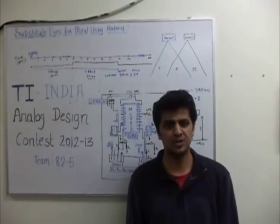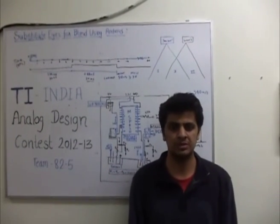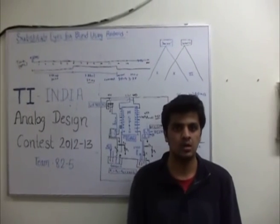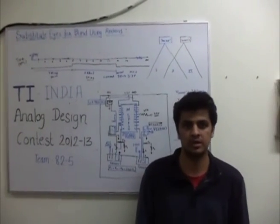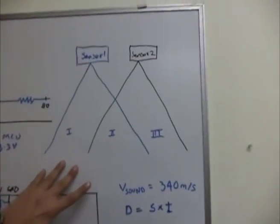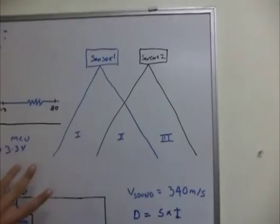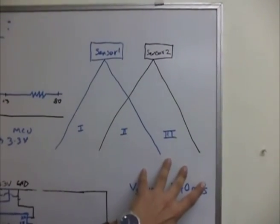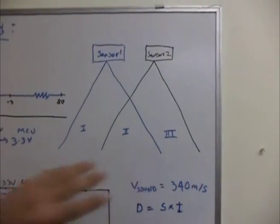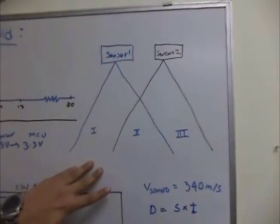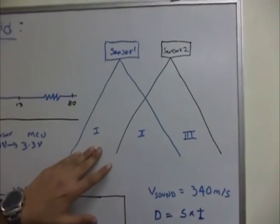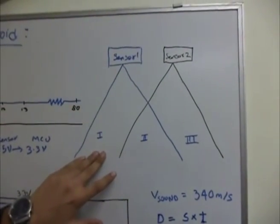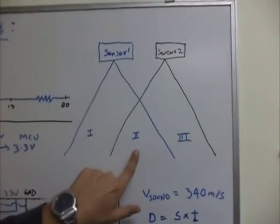The disadvantage of using a single ultrasonic sensor is its very narrow range. We have overcome this problem by using two ultrasonic sensors, which gives us a wider range. Another advantage of this design is that we can also get an approximation of the location of the obstacle — whether it is lying in region 1, 2, or 3.